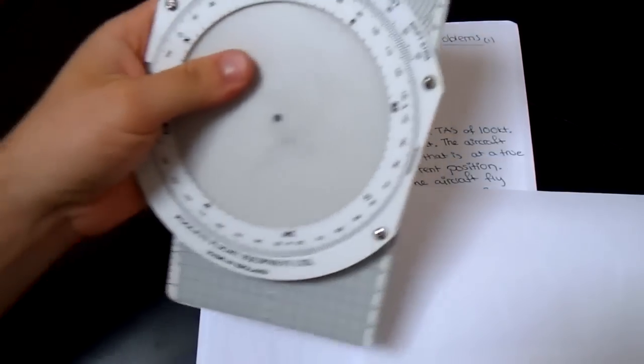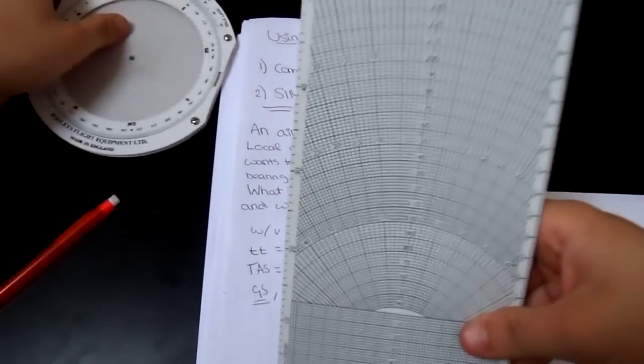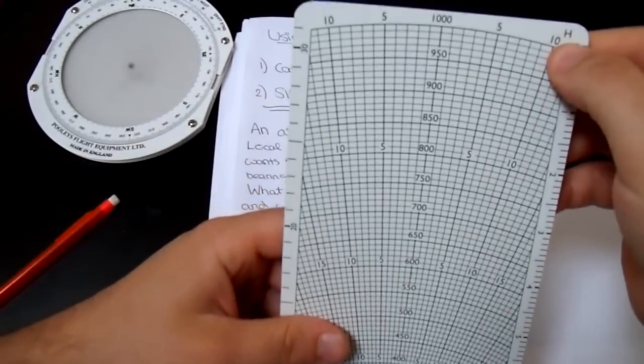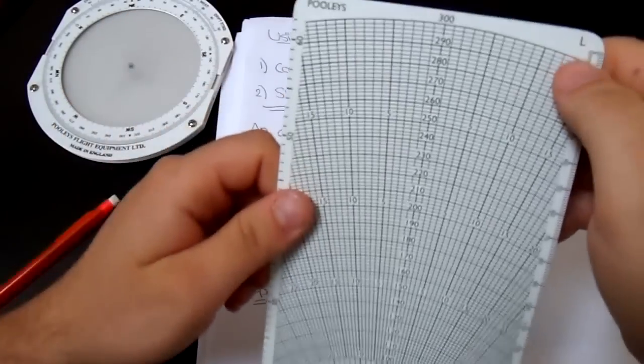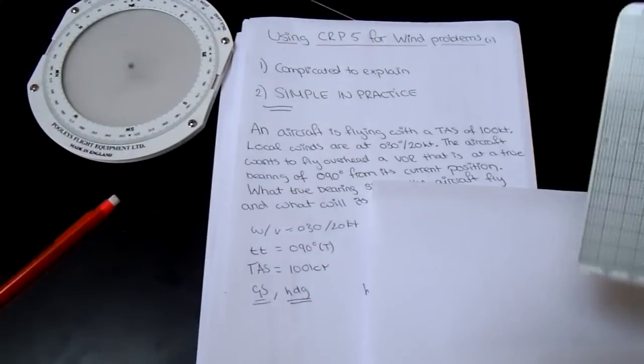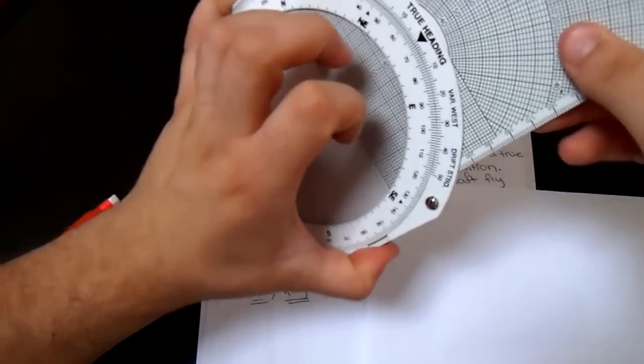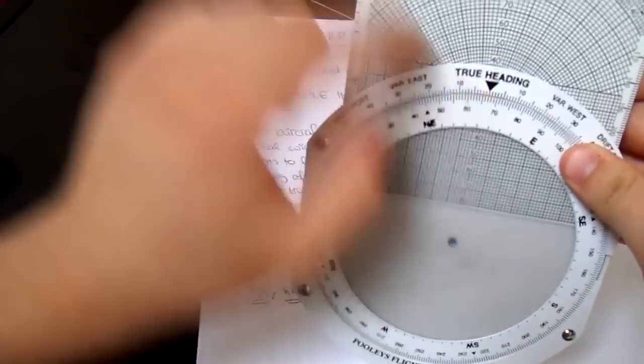And you've got the winds, you've got the true track you want, and you've got the TAS. And you want to find the ground speed and the heading. Well, here's our CRP. What you'll notice about the rule slide is that there's two sides to it. There's a high wind speed side and there's a low wind speed side. In this case, we're going to use the 100 knots, so it's a low wind speed side.